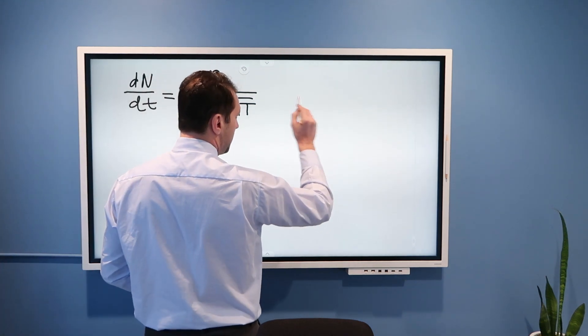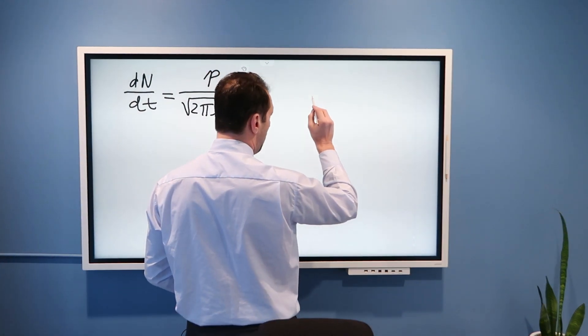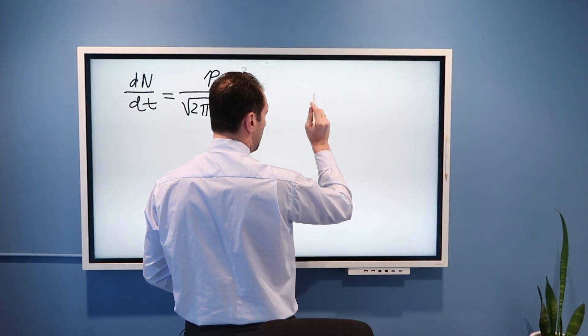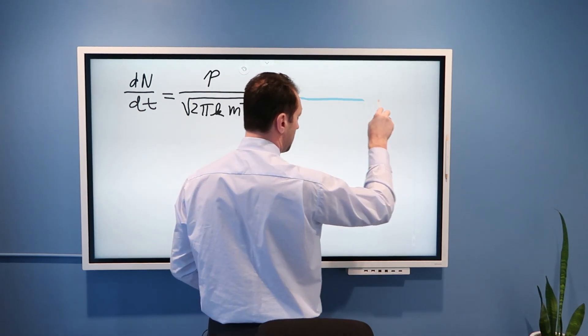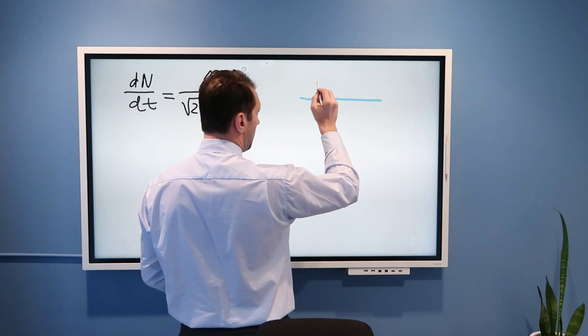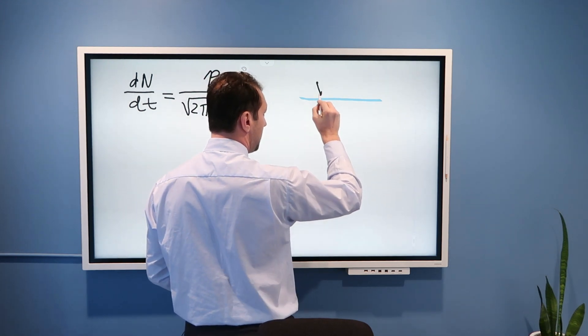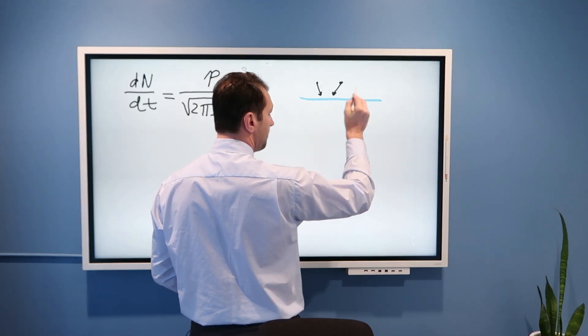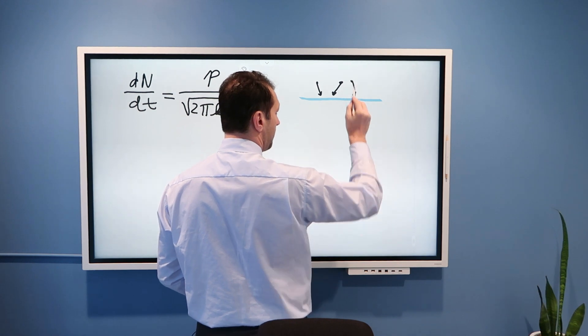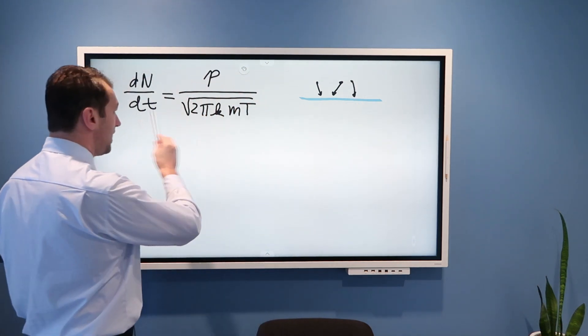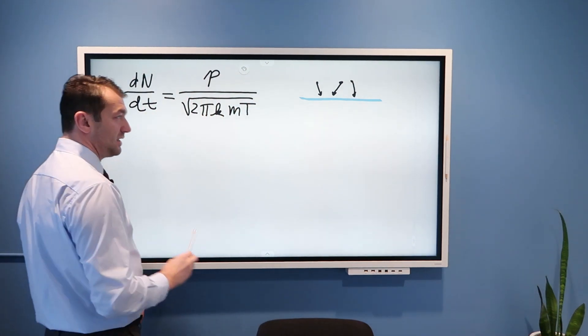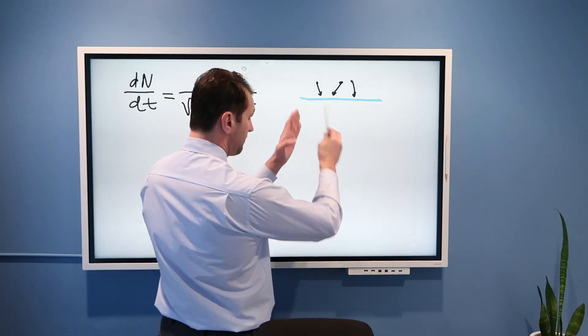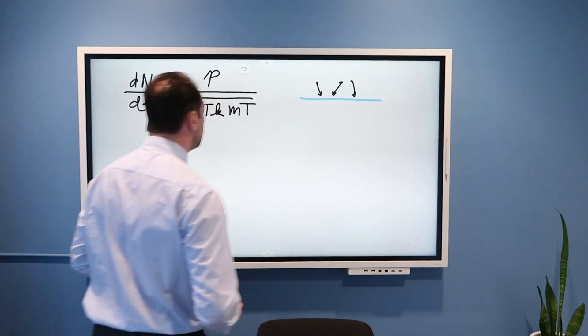So just to remind you, if we have a wall like so and then we have some atoms colliding with this wall, this formula gives us dn/dt, number of atoms colliding with unit area of this wall in time t.